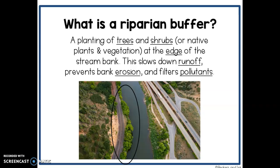A riparian buffer is the last big term we're going to talk about today. A riparian buffer is a planting of native plants and vegetation near a river — you can actually plant trees and shrubs near the river or at the edge of a stream bank. Riparian buffers are good because they slow down the runoff, which prevents bank erosion and filters pollutants, keeping them out of the river.